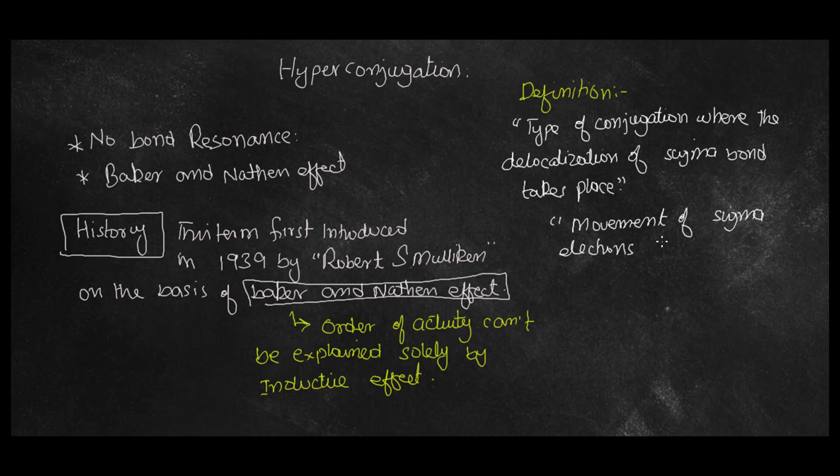Now, the type of conjugation where delocalization of sigma bond takes place, movement of sigma electrons through the adjacent pi system or carbocation, is hyperconjugation. Now let me explain some examples.